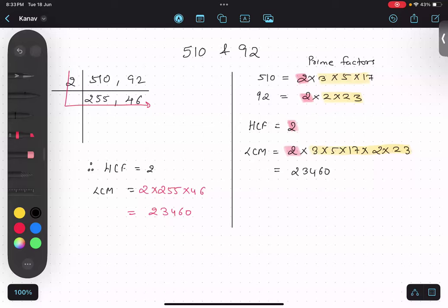Any doubt? No. So whichever method you like, you can try. Now, the question was verify that LCM multiplied by HCF equals first number multiplied by the second number. So solving left hand side, okay?